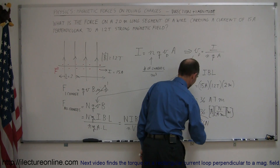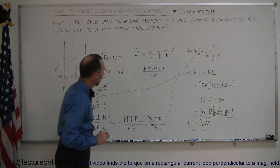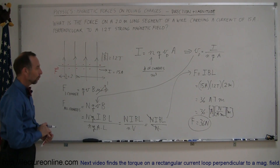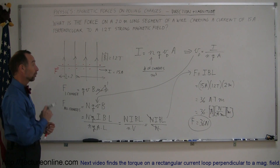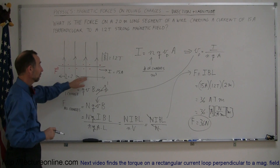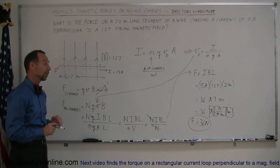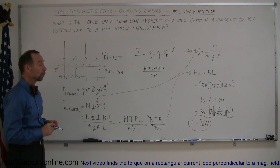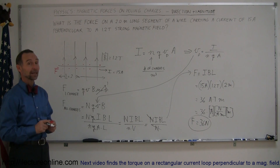That's the magnitude of the force on this wire — a wire of length 2 meters carrying a current of 15 amps, which is a pretty strong current, in a very strong magnetic field of 1.2 Teslas. That wire will feel a force of 36 Newtons. And that's how you do a problem like that.